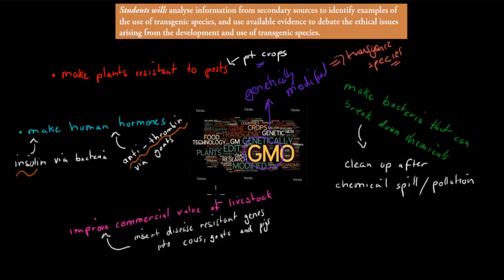We can also improve the commercial value of livestock, by for example making them disease resistant, or by making them produce more milk, or by making them bigger when it comes to meat production, so they are more fleshy. All these would be examples of how we can improve the commercial value, so financial value of livestock, using GM foods or GM species.